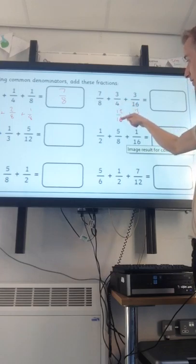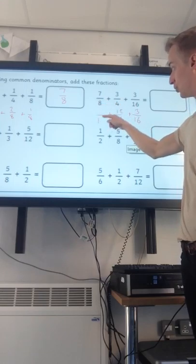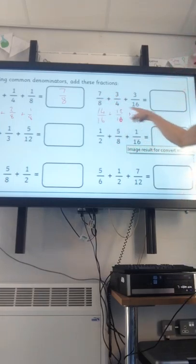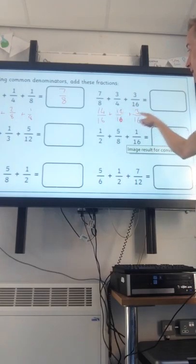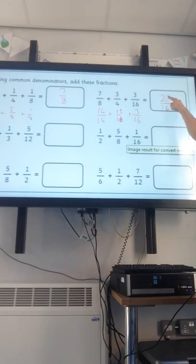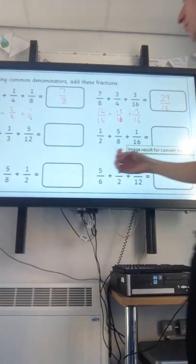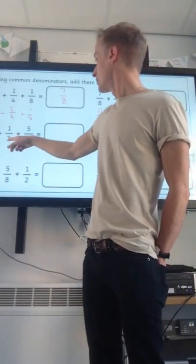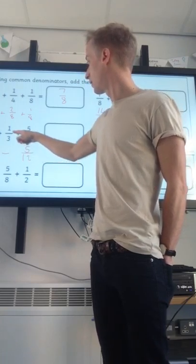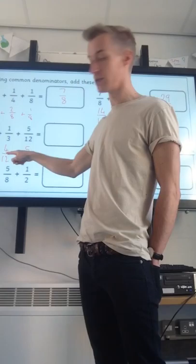Up here, we've got eighths, quarters and sixteenths. So 16 is going to be our sensible common denominator. That's already sixteenths. Times it by 4 to turn, sorry, that's meant to be a 6. 4 times 4 is 16, so 3 times 4 is 12. And times 2 to turn it into 16. There we go. And now I can get adding. So I know that 12 add 3 will give me 15. 14 add 15 is 29. That's 29 sixteenths. So I might have converted to a mixed number as well.